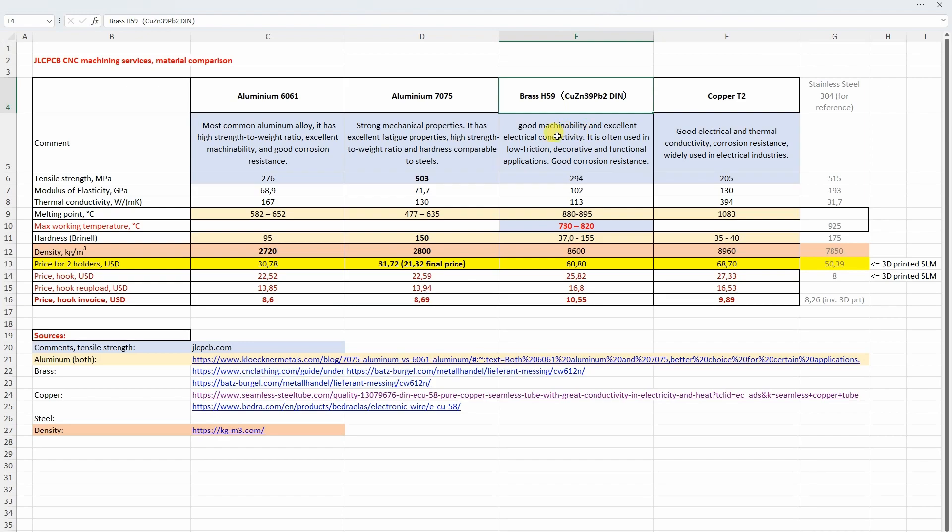Brass, good machinability, excellent electrical conductivity and it is often used in low friction projects, you know like nut on the z-axis on 3D printers. And it has good corrosion resistance. What is very interesting here is that it has very high maximal working temperature. So if you need this kind of project definitely this is a great material because don't forget, look at this aluminum, this is already the melting point, not even the working temperature.